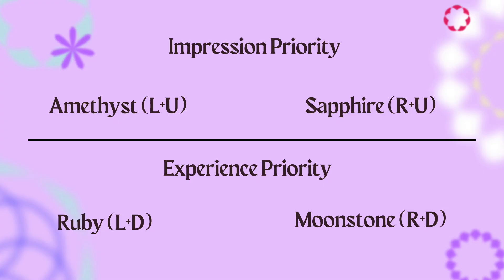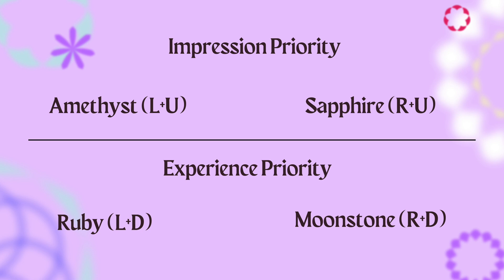The ruby and moonstone keys use the experience focus as their top bread slice. If your style is impression focused, you're primarily judging the impression your style makes — how you're able to show yourself to other people. It's not sacrificing authenticity to please others; it's acknowledging a strong desire to be seen and understood. You want your clothes to say something about you without you having to say it yourself. Just wearing jeans and a simple sweater doesn't tell that much about who you are, which undermines that desire. The amethyst and sapphire keys use the impression focus.